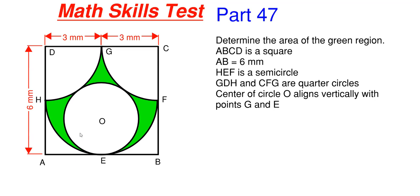We are also told that HEF, this point from H, E to F is a semicircle. If we were to draw a straight line from H to F, that would be our semicircle. And then we have GDH here in this left corner, top left corner, and we have CFG in this top right corner are both quarter circles with our centers being at D and C. We also have this circle right here, this full circle with center O, and we are told that the center of this circle O aligns vertically with points G and E. We are also shown that our quarter circles are in fact each three millimeters in radius.